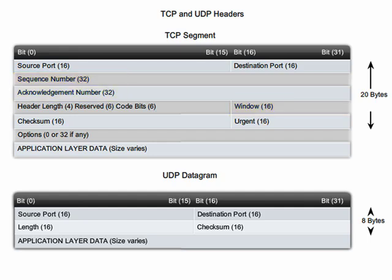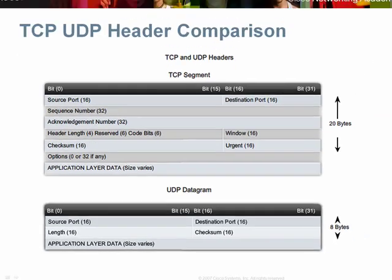This does not mean that applications that use UDP are always unreliable. It simply means that these functions are not provided by the protocol and must be implemented elsewhere, usually at the application layer, if required.